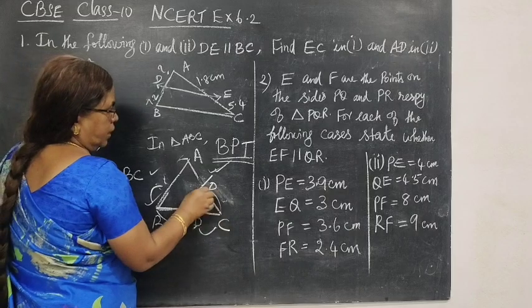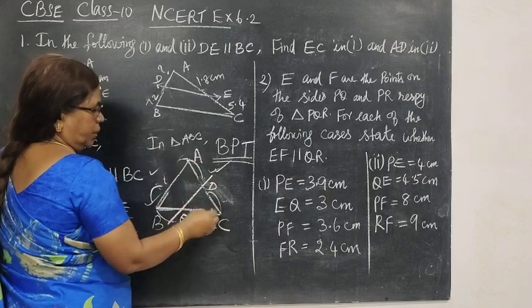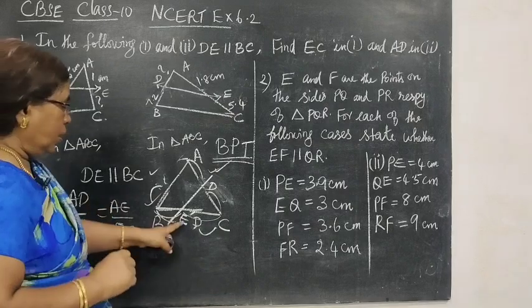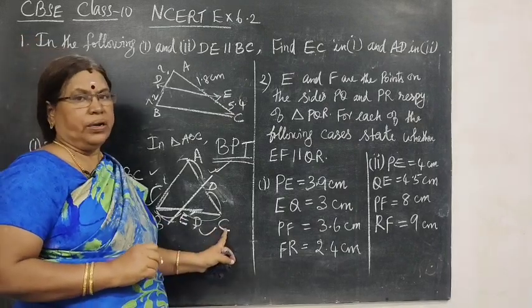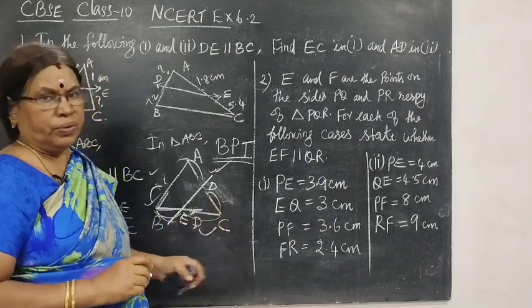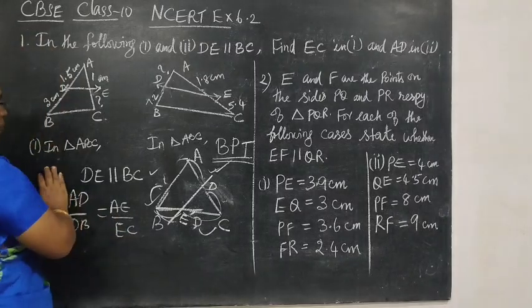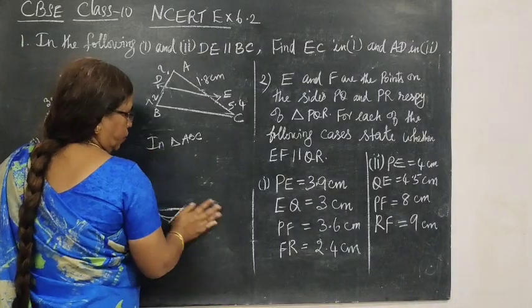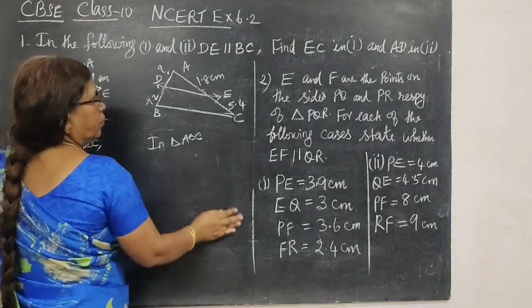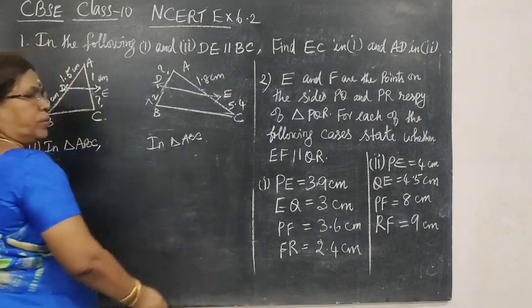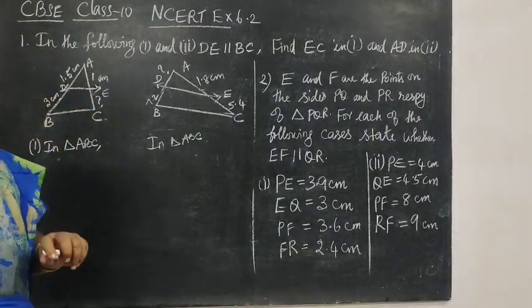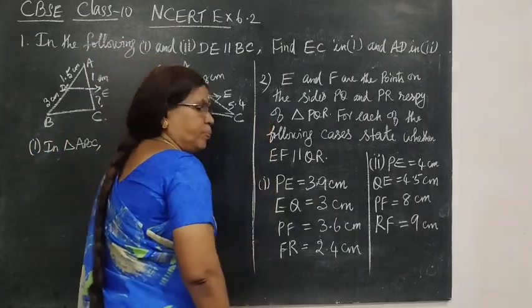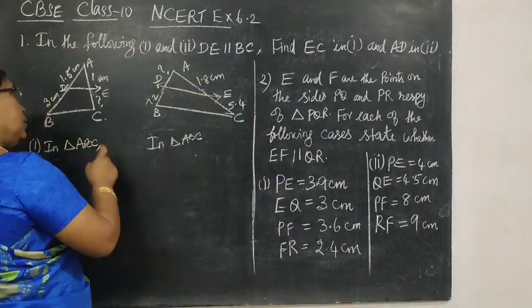CD by DB equal to CE by EB. We are starting from the vertex, conveniently we are starting from the vertex. This is basic proportionality theorem. In a triangle, if we draw a line parallel to any one of the sides, it divides the other two sides in the same ratio.